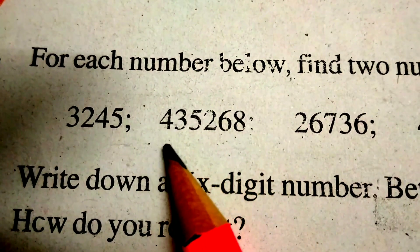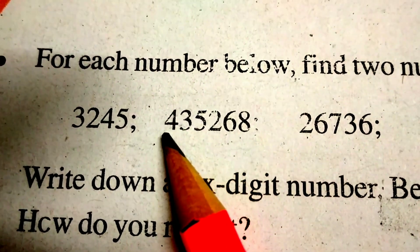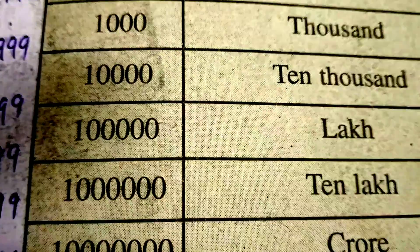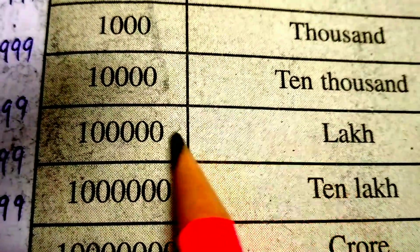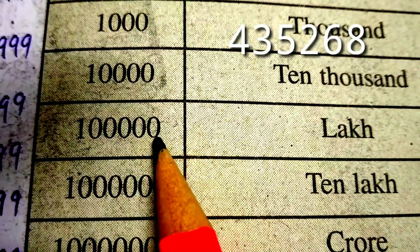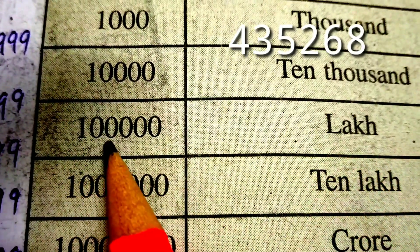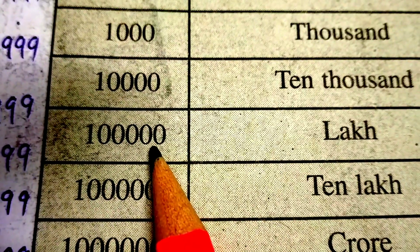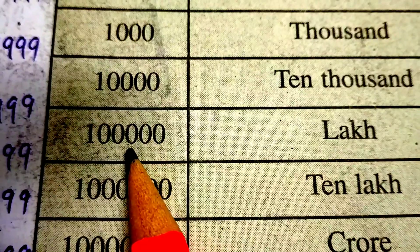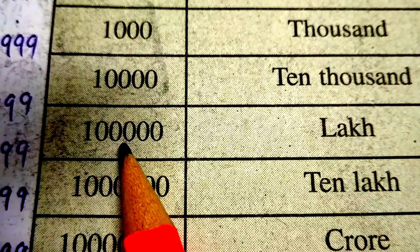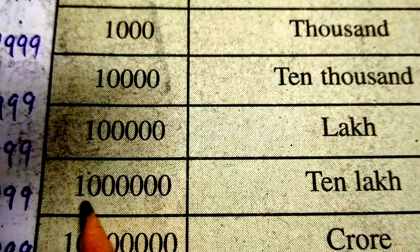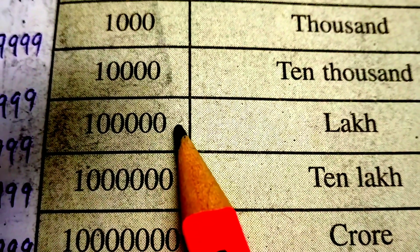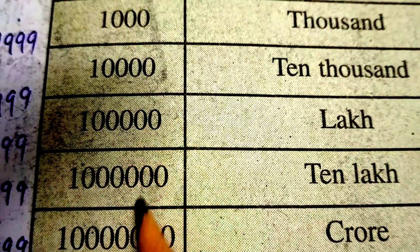Now, let us write this number. This number — how many digits does it have? 1, 2, 3, 4, 5, 6 — the number of digits is 6. Let us write this as a 6-digit number. We have to write about the smallest number. Now we have 10 lakhs — it has 7 digits. The smallest 6-digit number is 1 lakh. This number is 10 lakhs.